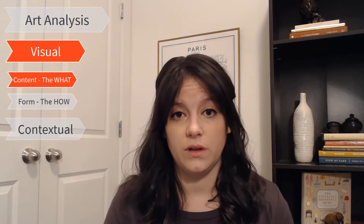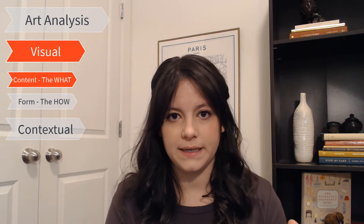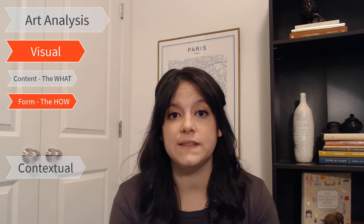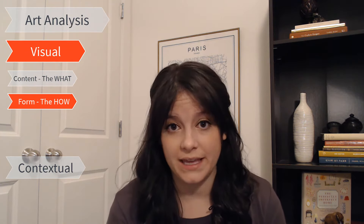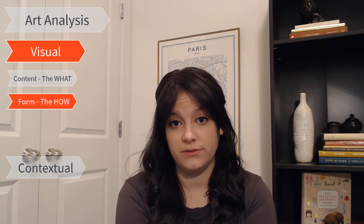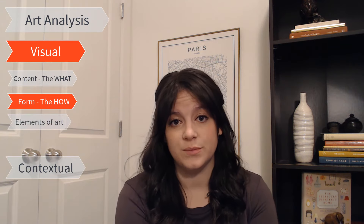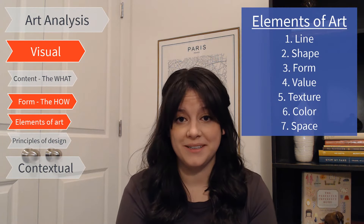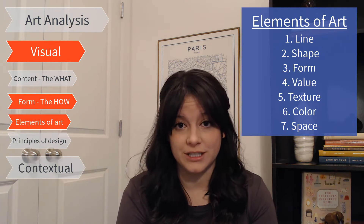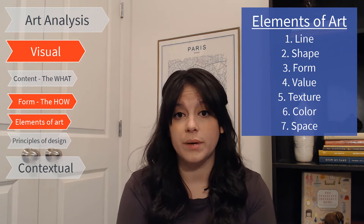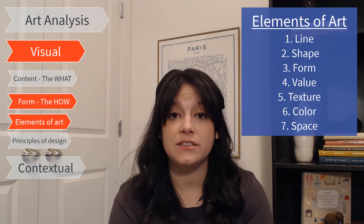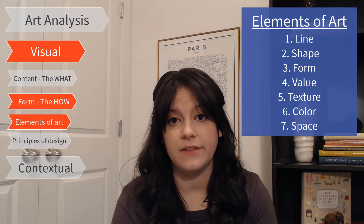Content is the first aspect of visual art analysis — the what of the piece, what is happening. The second aspect of visual art analysis is form. This is the how — how was this piece created? What are the elements that went into its design? What decisions did the artist make? There are two aspects of form: first, the elements of art, and second, the principles of design. There are seven elements of art: line, shape, form, value, texture, color, and space. These are straightforward — the most important thing is these are things you can actually see in the piece. For more details on each element, download my art analysis PDF linked in the description below.